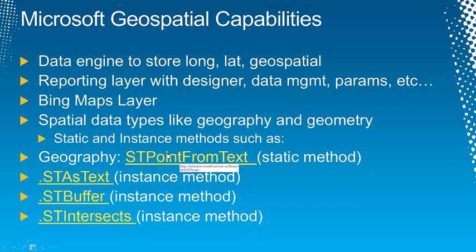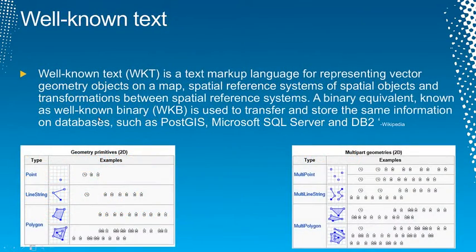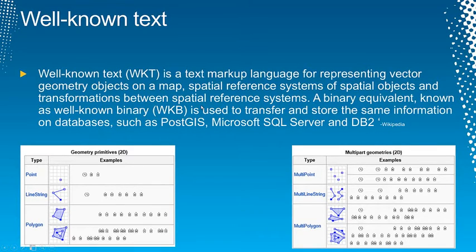With these spatial methods, you can get buffers around certain points and find intersections. The first method gets a geometric point from a well-known text; another converts it back to well-known text; and another gets a buffer and intersection around a given point. A well-known text is a standard in the geospatial community for representing things like points, line strings, and polygons. In our case today, we'll focus on line strings — representing streets — and polygons representing buffers around those streets.